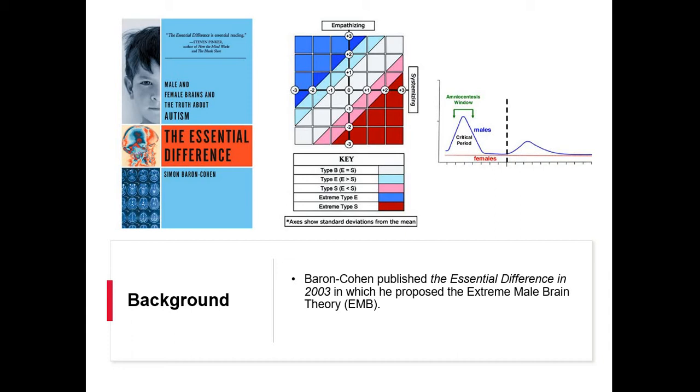Empathizing was found to predict entry into the humanities among university students and systemizing predicted entry into science. It's a combination of empathizing and systemizing. If you have higher systemizing than empathizing, you would have a type S brain which is more male. More empathizing than systemizing is type E brain, more female. The extreme form of type S has to do with autism.